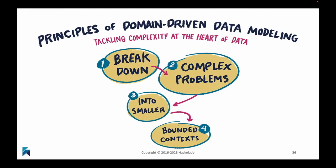The second principle is that in order to be able to focus on the core, you actually need to break down complex problems into smaller ones. We call this a bounded context. We create these limited domains that you can focus on, that you can really solve one problem at a time. Obviously, you still need to keep the bigger picture in mind and make sure that the bigger problem also gets solved, but the way to get there is by tackling this complexity one by one.